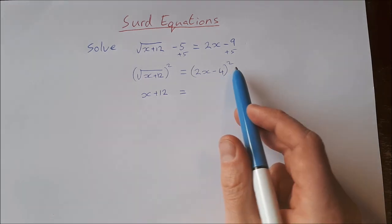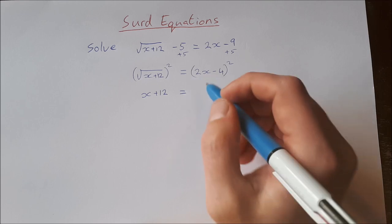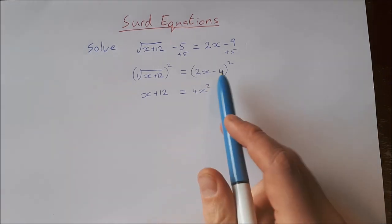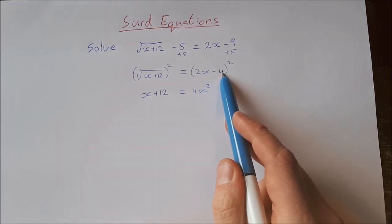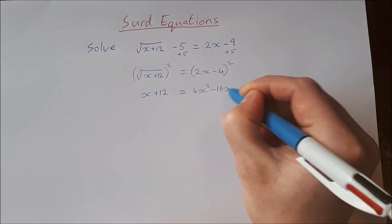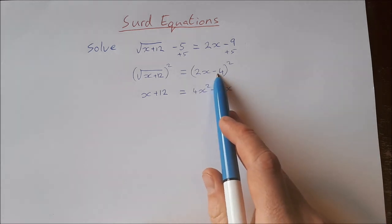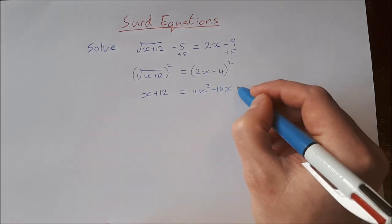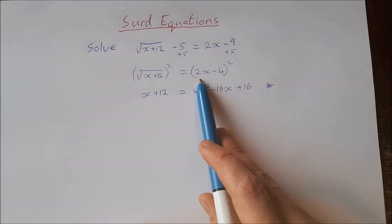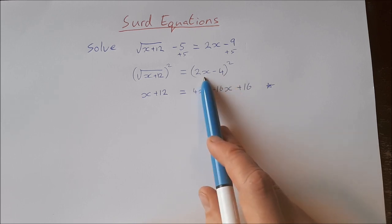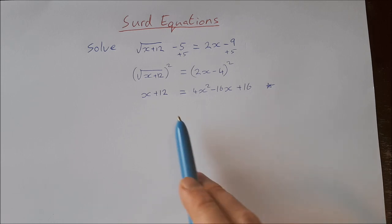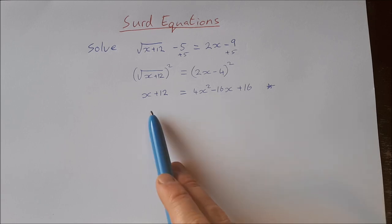On the right-hand side we have 2x minus four, to be squared. The way I like to do this: square the first — 2x times 2x is 4x squared; twice the product — 2x times minus 4 is minus 8x, times 2 gives minus 16x; then square the second — minus 4 times minus 4 is plus 16. If you don't know what I did there, I have a video on how to square out brackets — square the first, twice the product, square the second — I'll put the link in the description below.